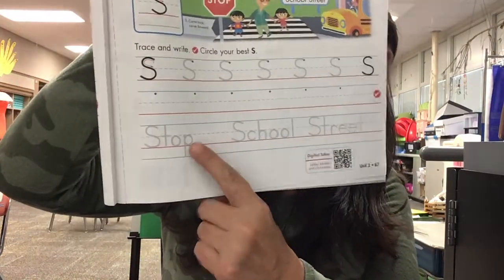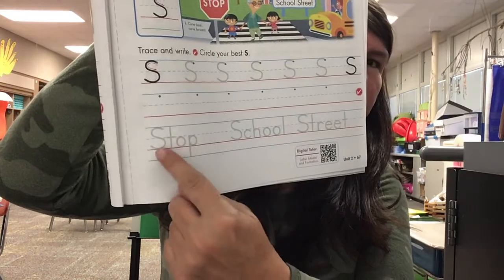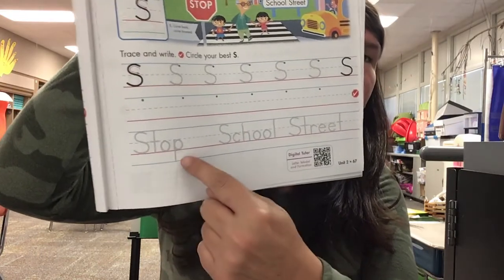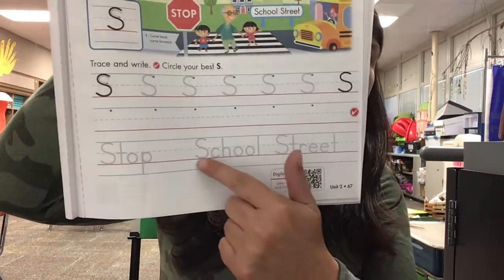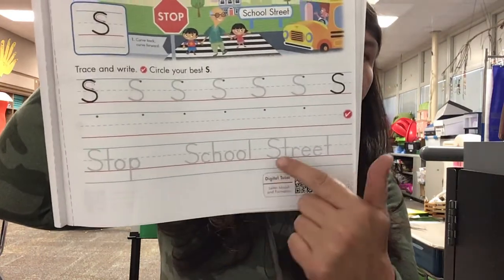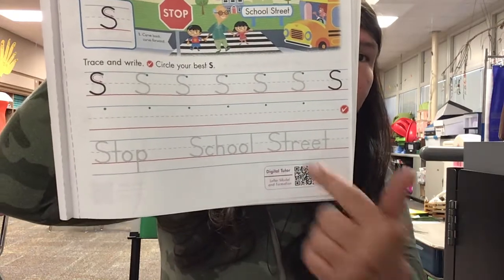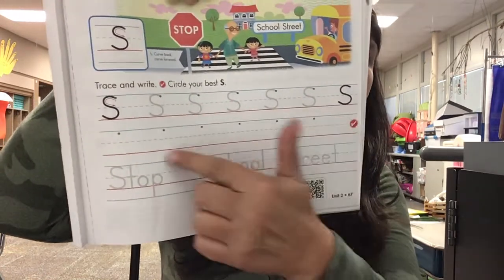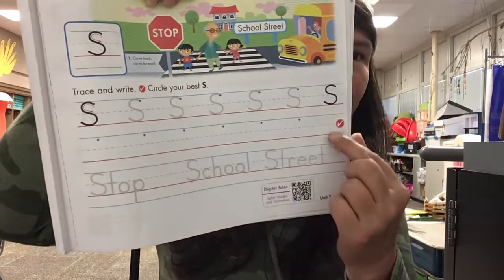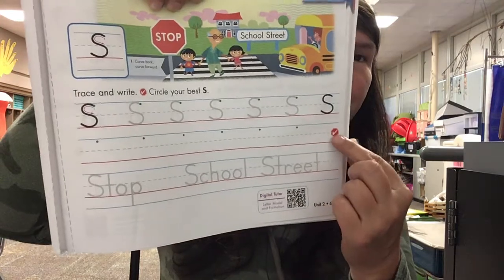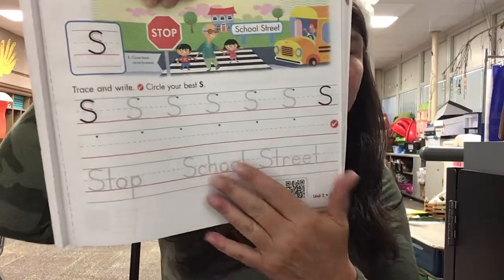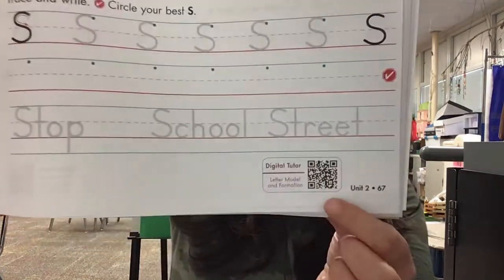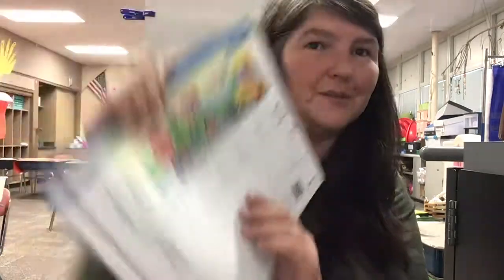Down here you'll write 'stop,' 'stop,' 'stop,' and here you'll write 'school' and 'street' — uppercase S's. Trace, then check for your best one and circle it. Trace down here too. Before you start, watch your digital tutor. Have a good day!